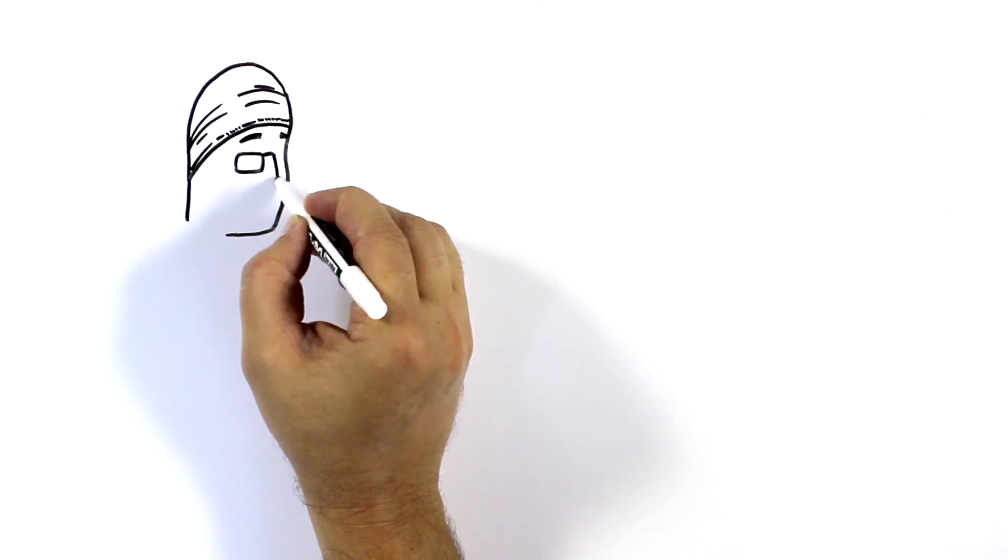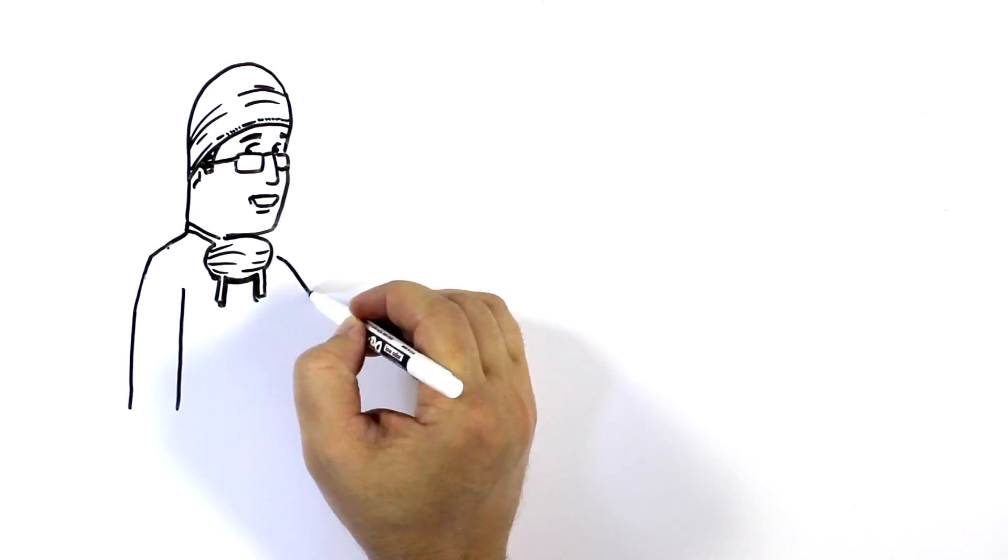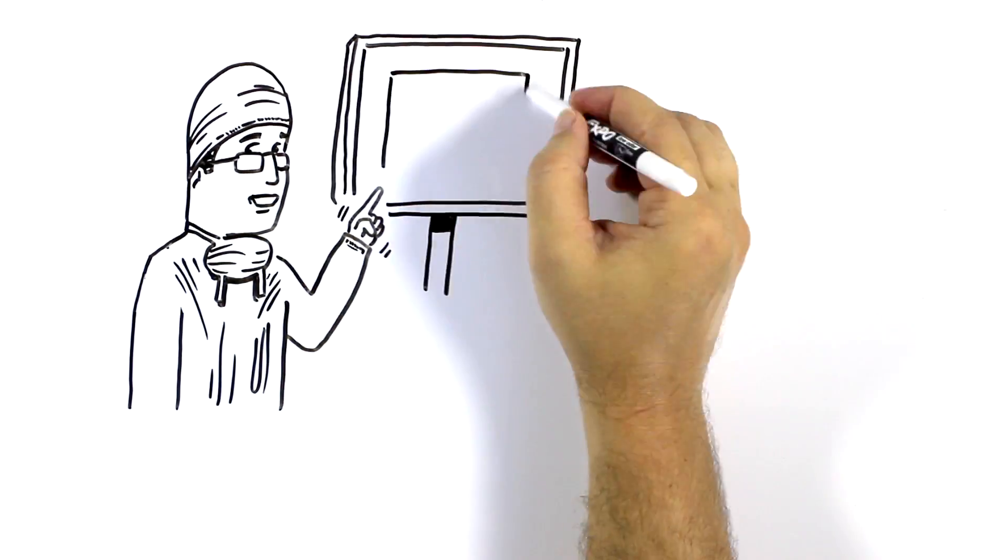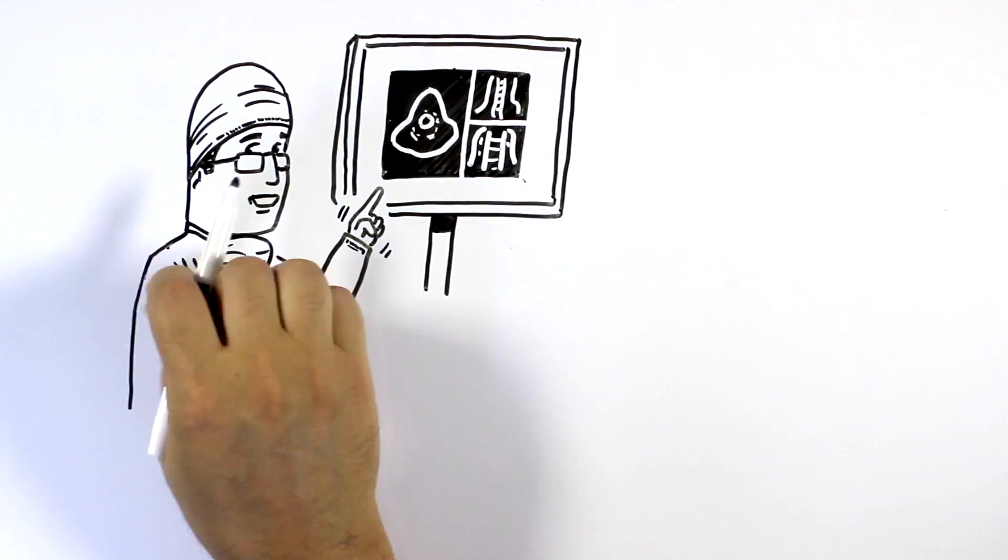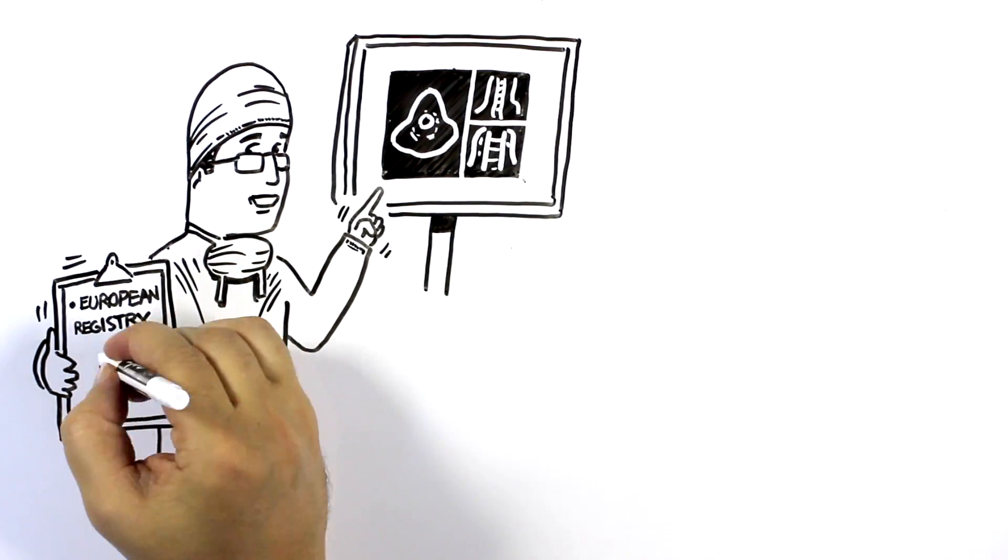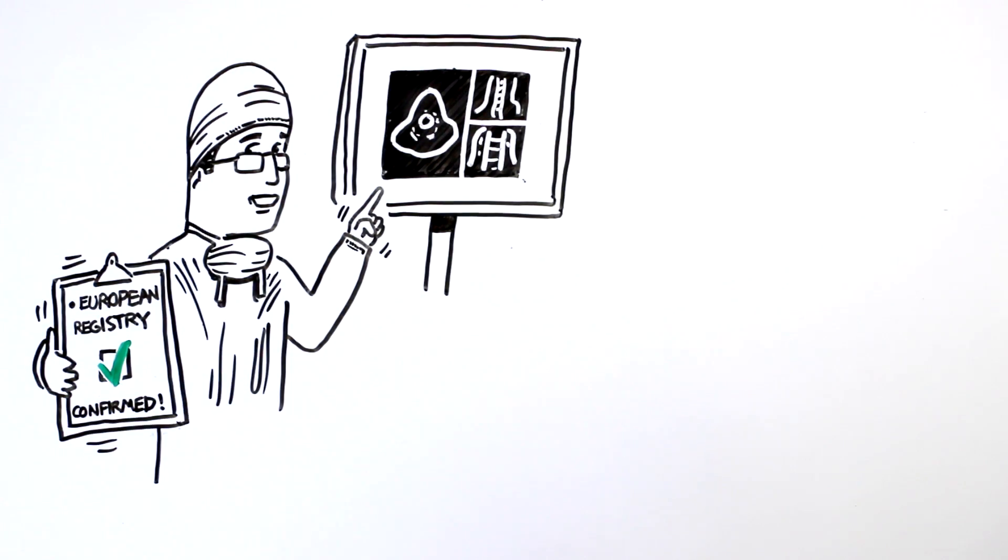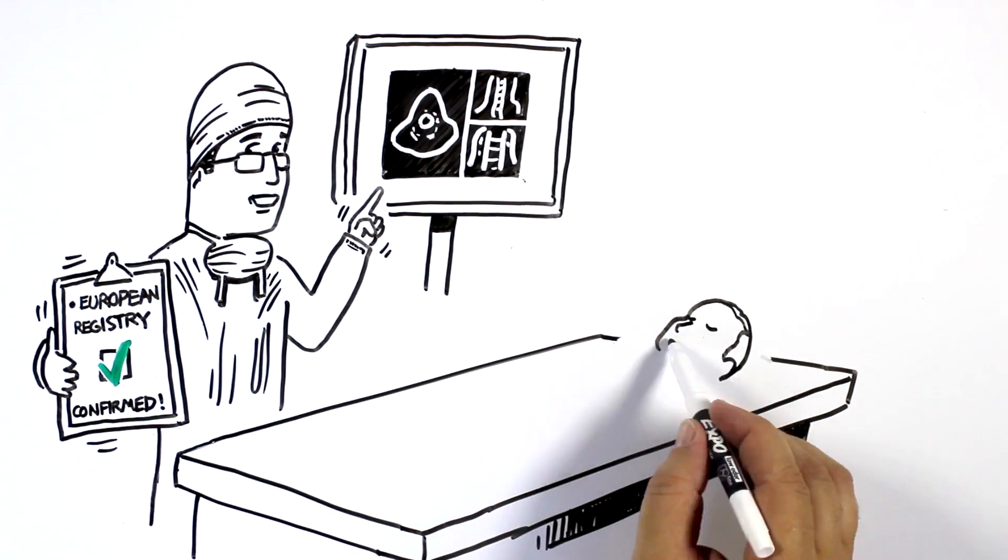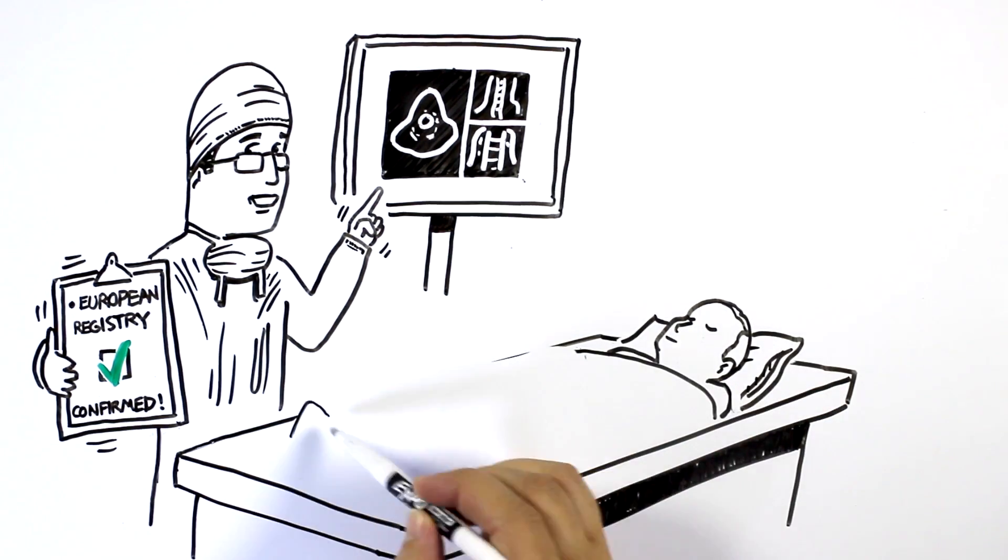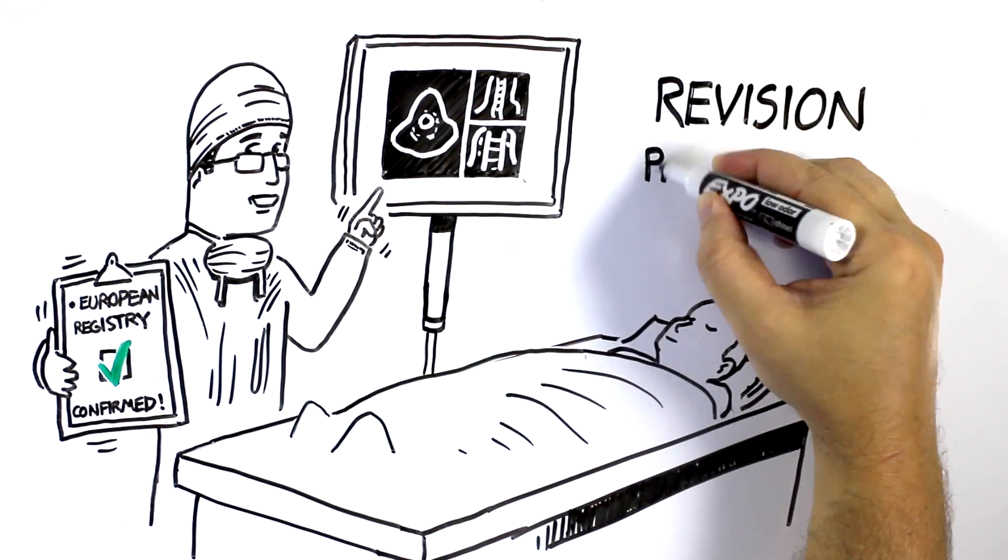But one of O-ARM's most important jobs is near the end of a surgical procedure. Before closing the patient, the physician can take a 3D image to confirm their surgical goals were met. Data from the European registry and three other observational studies suggest the opportunity to reposition misplaced hardware while the patient is on the surgical table can potentially eliminate the need for a revision procedure.